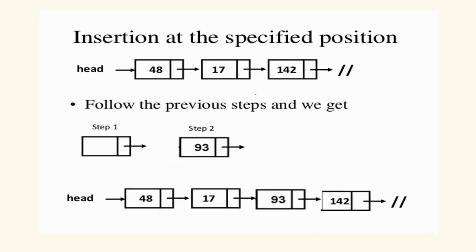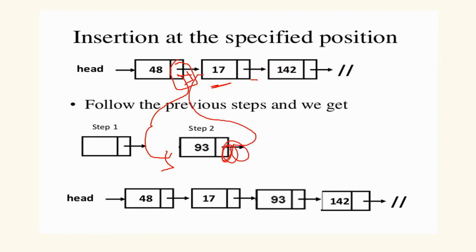Insertion at a specific position is a bit tricky. Suppose you want to insert between node 48 and node 17: initially 48 points to 17 and 17 points to 142. You change the address field of 48 to point to the new node's memory location, and set the new node's address field to point to 17. The rest of the list remains normal, so the sequence becomes 48, new node, 17, 142.